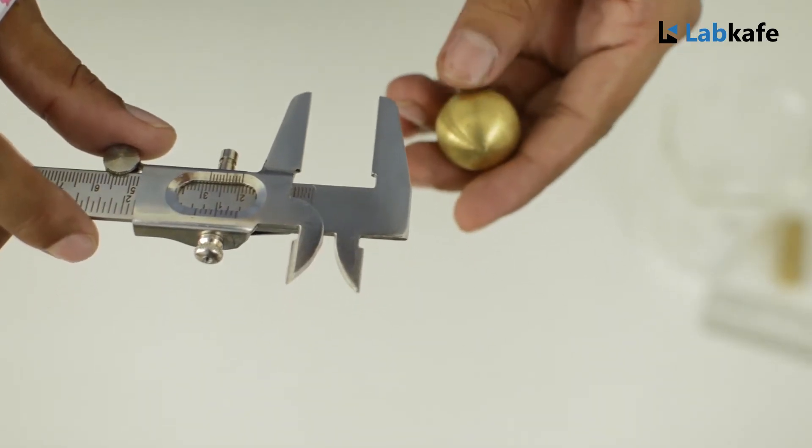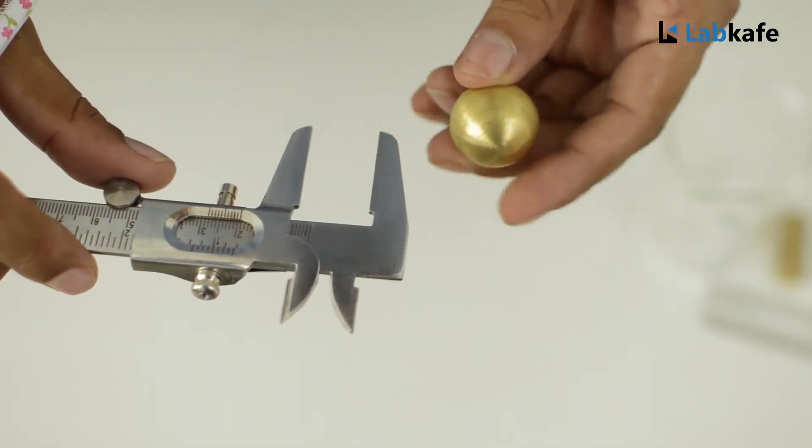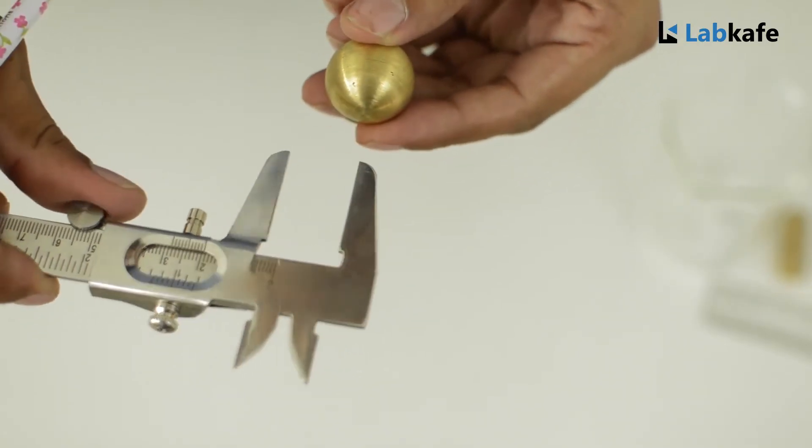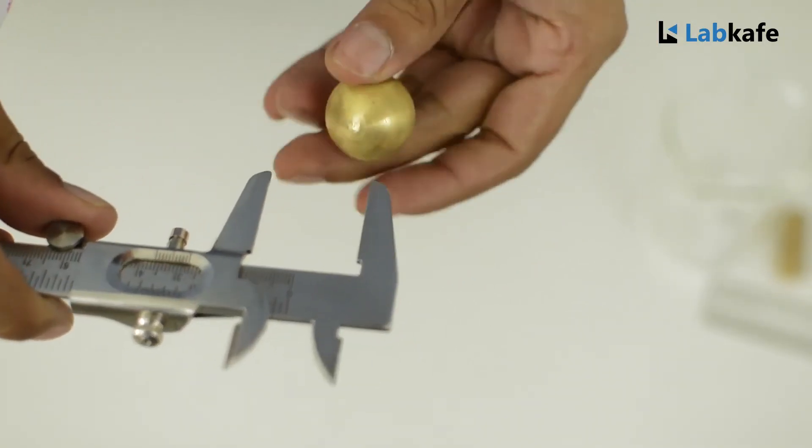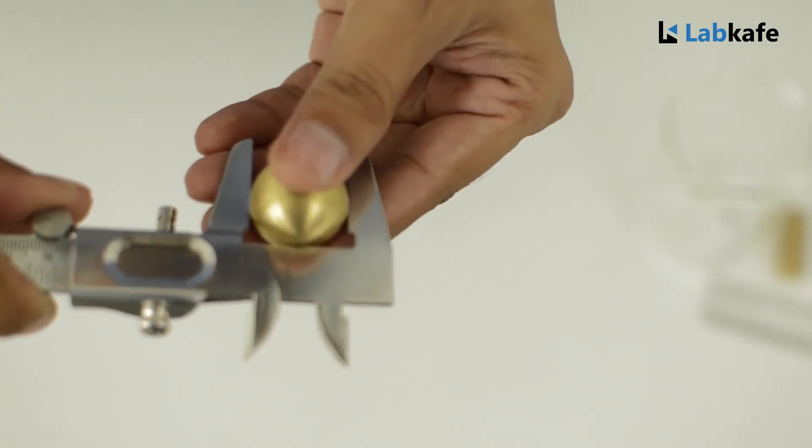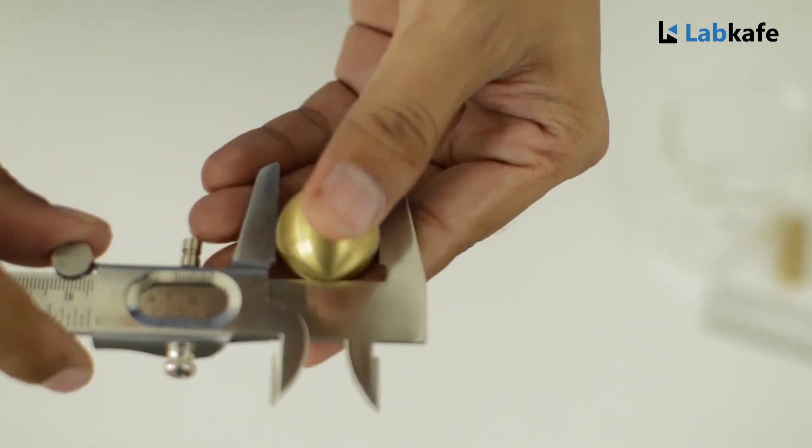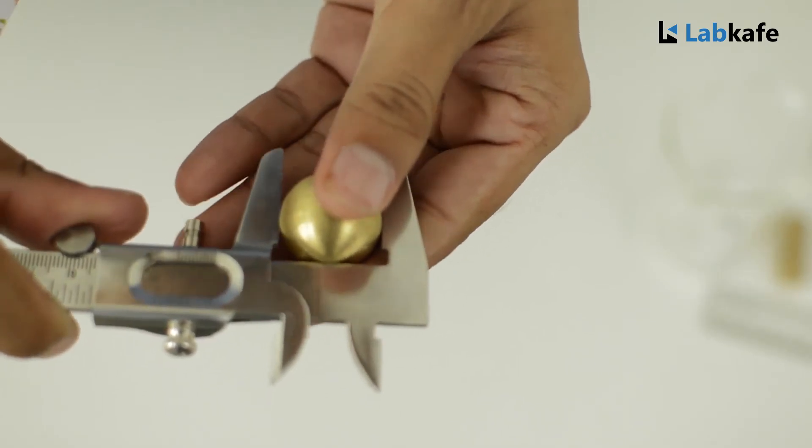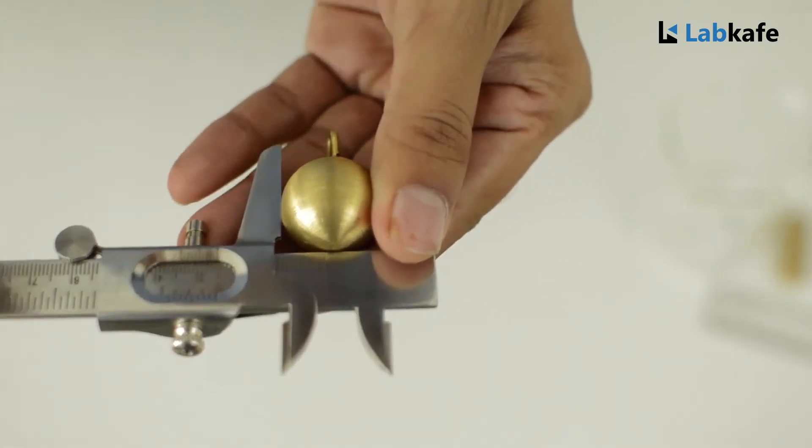Procedure: We will measure the diameter of this spherical body. To do so, we will insert this spherical body between these jaws and with the help of the screw, we will grip it gently and then take the reading of main scale as well as vernier scale.